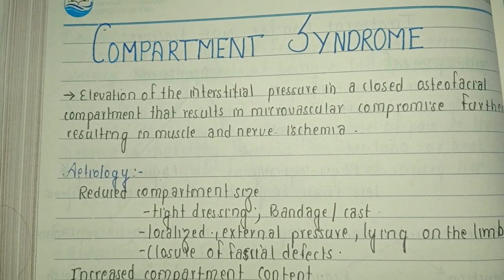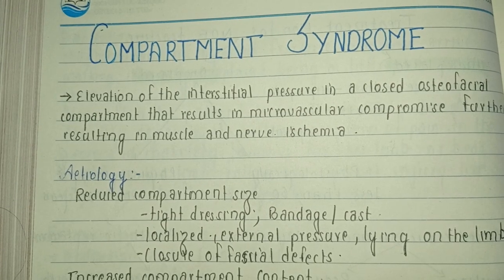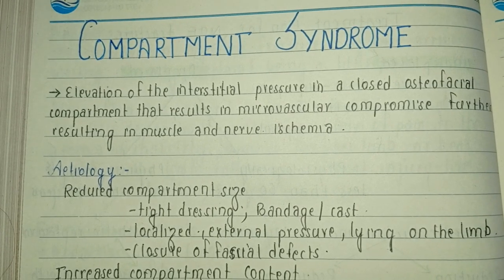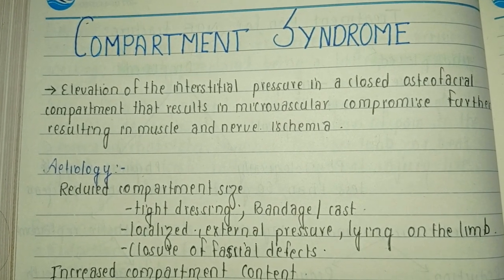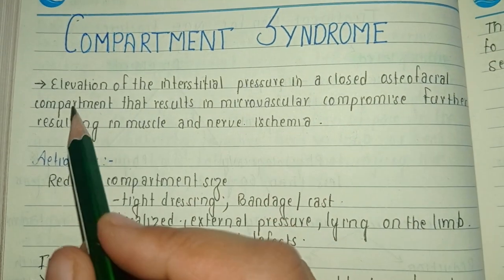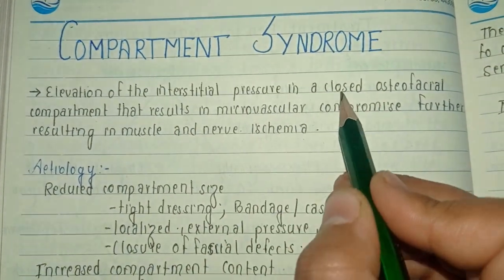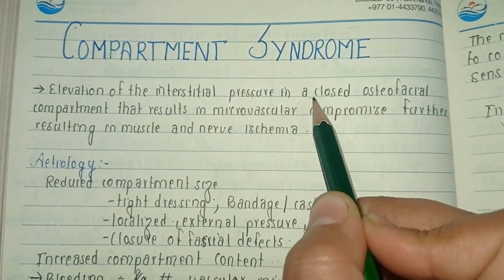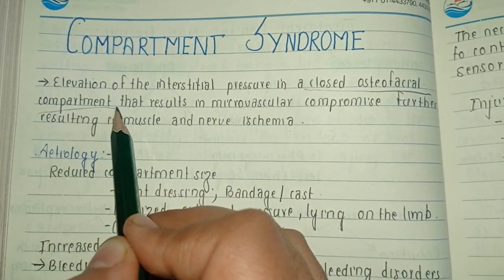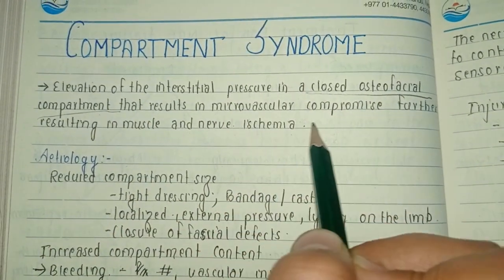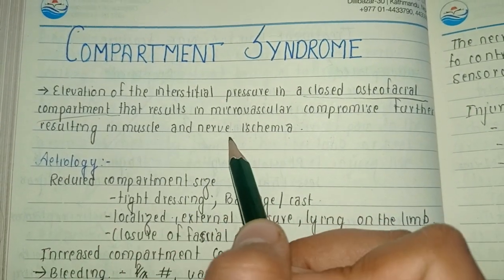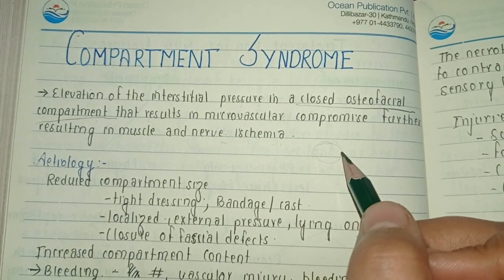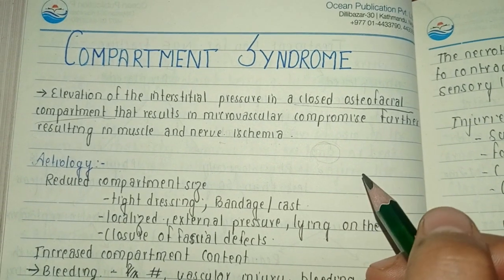Hello everyone, let us discuss compartment syndrome, which is one of the most important topics in orthopedics. It is an orthopedic emergency. Compartment syndrome is basically the elevation of the interstitial pressure in a closed osteo-fascial compartment. We have to understand that this closed osteo-fascial compartment results in microvascular compromise, further resulting in muscle and nerve ischemia.